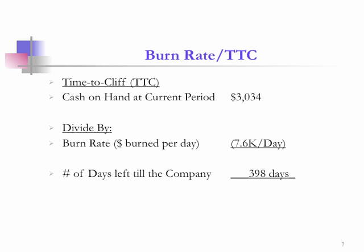Now if we went back to their balance sheet, we'd be able to see that at the end of 2001 they had $3.034 million in cash on hand. We divide that by the burn rate of $7,600 per day and we'd roughly estimate 398 days left of cash on hand. A couple things to note: we're using the burn rate for 2001 and looking at the cash at the end of 2001, so technically we'd want to use the burn rate of 2002 going forward to give us a more ideal sense of how long that cash was going to last.